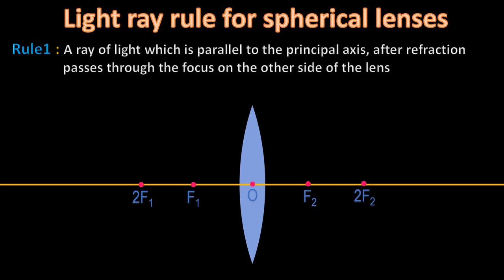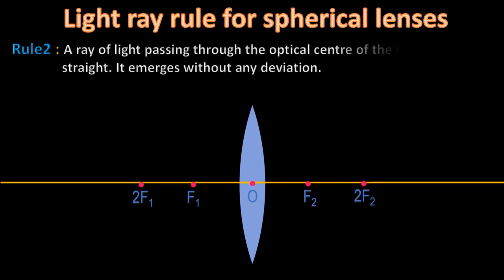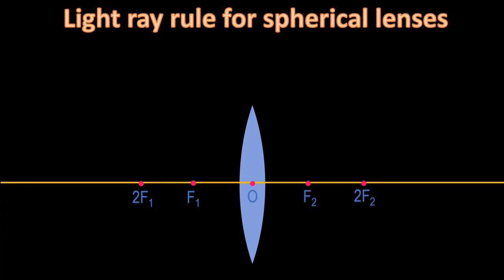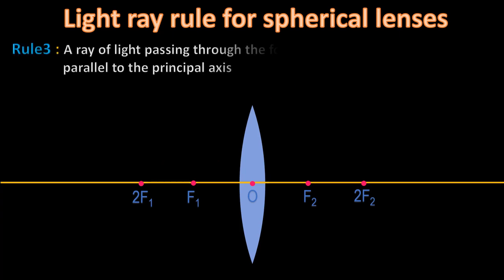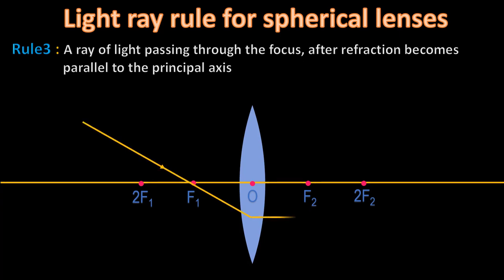Now let us look at the rules of image formation through a convex lens. Rule 1: a ray of light parallel to the principal axis, after refraction, passes through the focus on the other side of the lens. Rule 2: a ray of light passing through the optical center goes straight and emerges without any deviation. Rule 3: a ray of light passing through the focus, after refraction, becomes parallel to the principal axis.